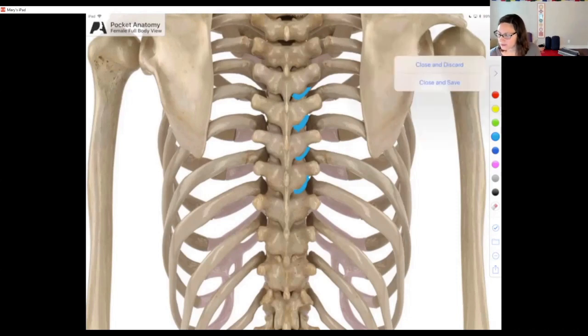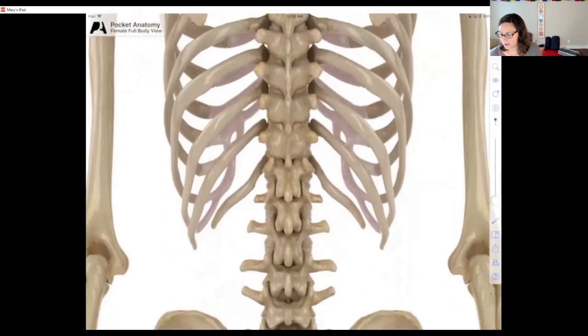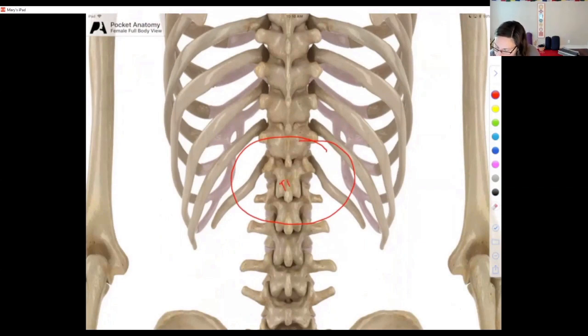Now let's take a quick look at T12L1 because this is another transitional segment of the column. So here we have T12L1. Now L1, the superior facets of L1 are oriented sagittally. The inferior facets of T12 are also oriented sagittally. But then we look at the superior facets of T12 and we see that they are now thoracic in nature. They're oriented on that 60 degree angle in the frontal plane.